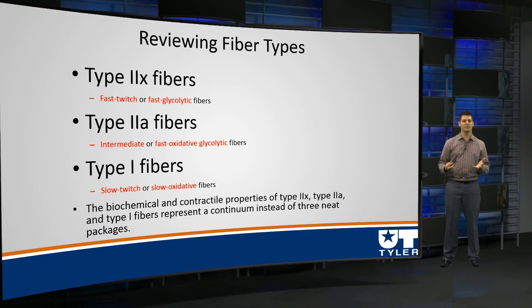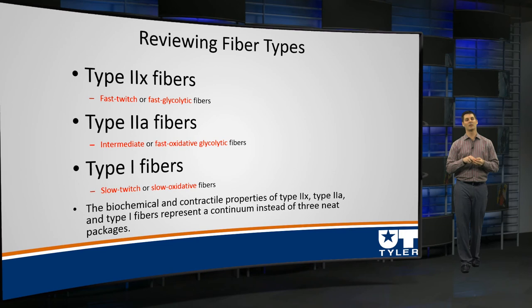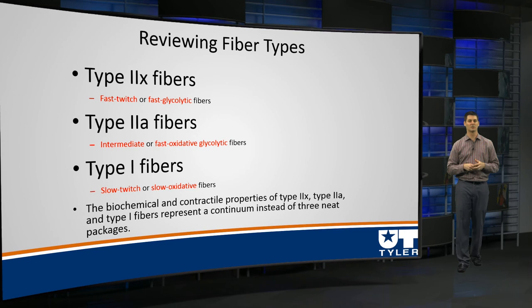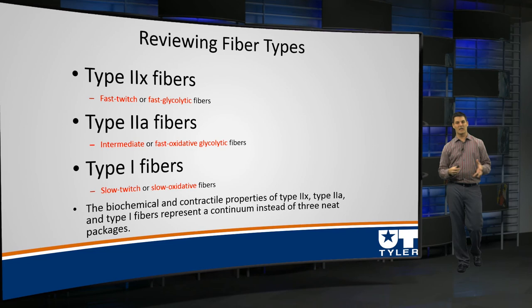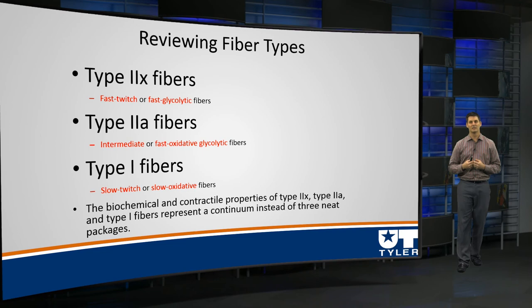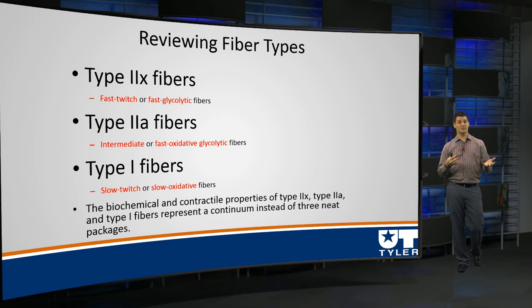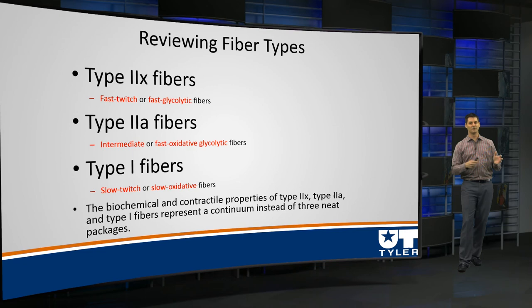To review fiber types: we have our type 2B or X fibers — fast twitch, relying heavily on glycolytic pathways. Our type 2A fibers are intermediate, having both oxidative and glycolytic properties. And then our slow-twitch muscle fibers, which are oxidative. There is a continuum between the three, and we'll note that exercise actually affects the properties and can cause sharing of characteristics between different muscle fiber types.